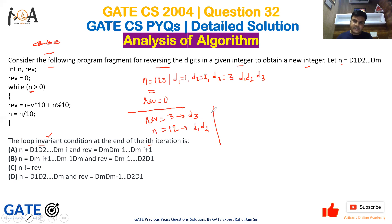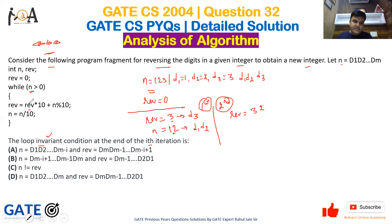In the second iteration, rev becomes rev into 10 plus n modulus 10 — that is 3 into 10, which is 30, plus 12 modulus 10, which is 2 — so rev = 32. And n becomes 12 divided by 10, which is 1. So after the second iteration, rev = 32 (that is d3 d2) and n = 1.